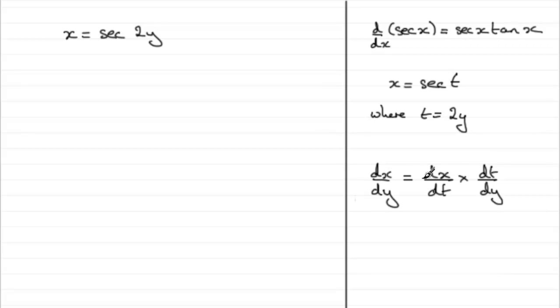So to get dx dy, let's just come over here now. Therefore dx dy is going to equal dx by dt. Well if x equals sec t, basically we've seen it's going to be sec t tan t. So in place of the t, it's going to be 2y. So it's sec 2y tan 2y.